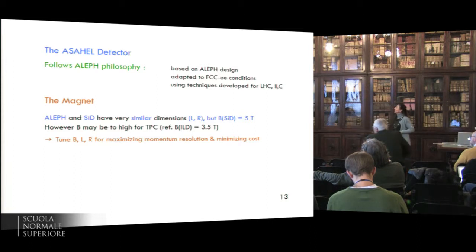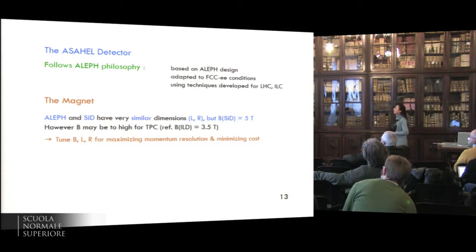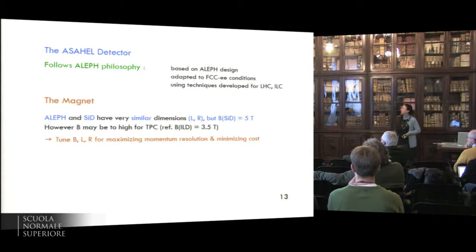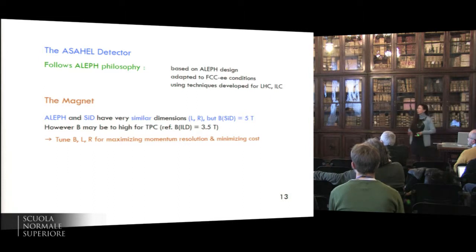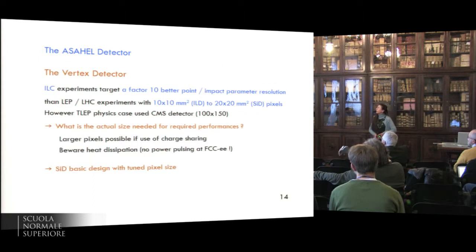Following the ALEF philosophy, the detector is based on ALEF design. It's adapted to FCC conditions, and it will use techniques developed for LHC and ILC. For the magnet, we are left in the SID, a similar dimension. The field is larger. However, perhaps we see this too high for TPC. One has to tune the field and the dimension for maximizing the momentum resolution and minimizing the cost. For the vertex detectors, the ILC experiment targets a factor of 10, better space point and impact parameter resolution than LEP or LHC experiments with a factor of 10, also smaller size detectors.